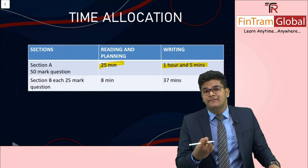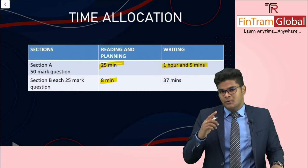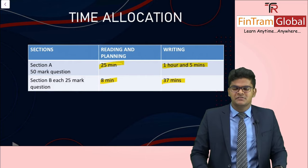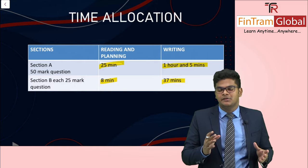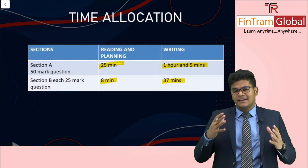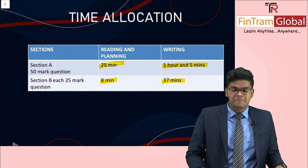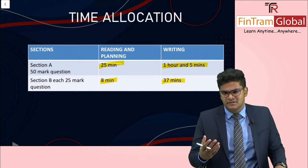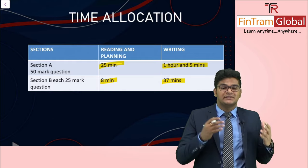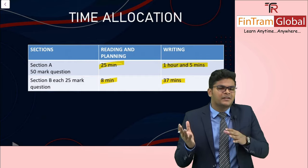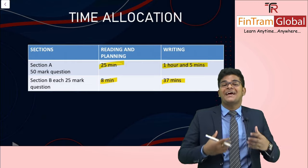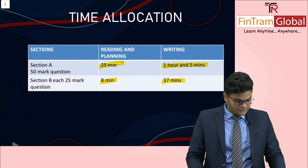For each 25-mark question, allocate around 8 minutes for reading and planning and 37 minutes for writing. The extra reading and planning time is specifically to plan a structure that earns professional marks. The time may vary between students — quicker readers and planners may need less time. For those who are slower, practicing timed questions will help build speed.